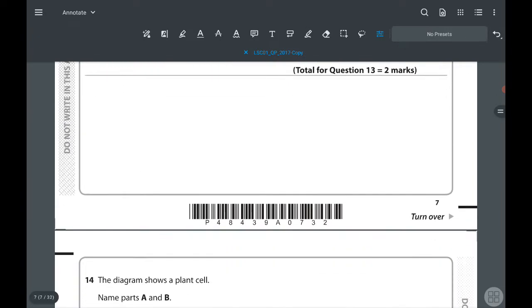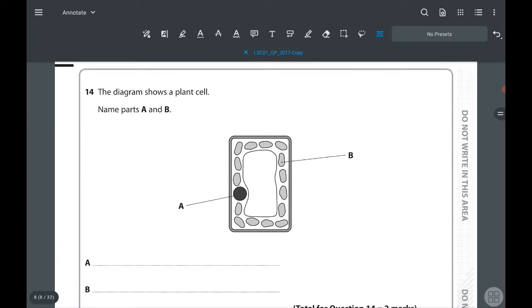Moving to the next question, 14th one. The diagram shows a plant cell. Name part A and B. A, you can see, is labeled to nucleus, and B is chloroplast.